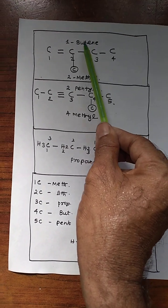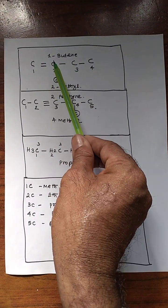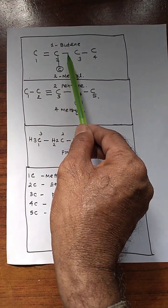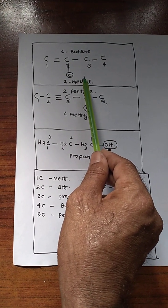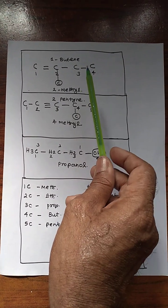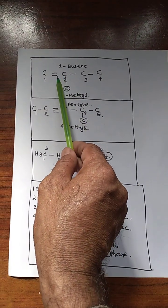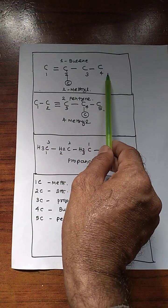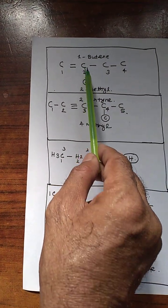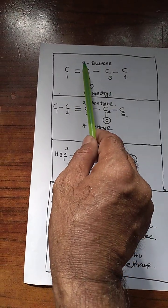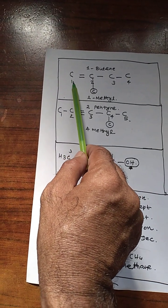This one: 1-butene. If it is a double bond, the suffix is -ene. Single bond means -ane. And triple bond means -yne. So C triple bond C, single bond C, single bond C — this one is connected to a methyl group. For numbering, if single bond and double bond are mixed together, priority is given to the triple bond or double bond. In this case, only double bond and single bond are available. So the double bond nearby carbon is taken as the first carbon — numbering 1, 2, 3, 4. The second carbon is connected to methyl. So 2-methyl-1-butene.